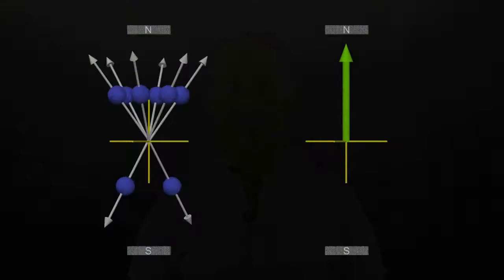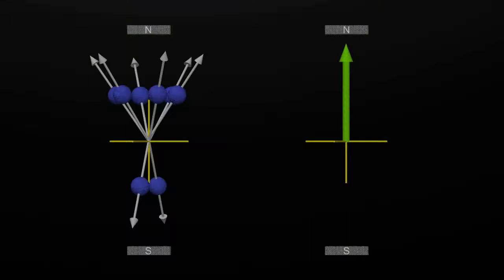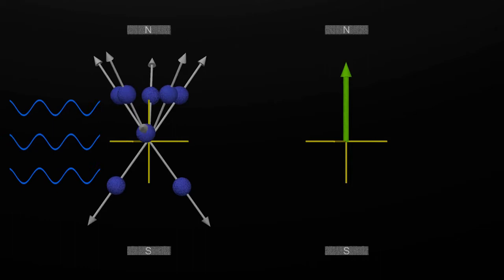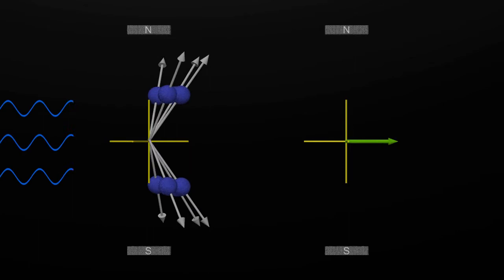Remember when we put radiofrequency energy into the protons of our body, two things happen. First, some of the protons flip into the higher energy state, and then they precess together to form a net magnetization oriented 90 degrees from the main magnetic field.